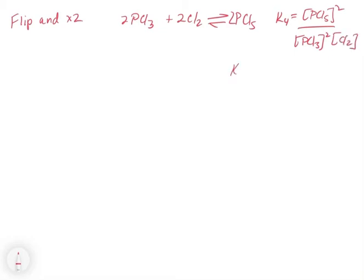So how can we get the value for K4 from our reference equation, K1? We would have to first account for the flip by putting 1 over K1, and then we would raise that K1 to the second power. So you'd get 1 over K1 squared.